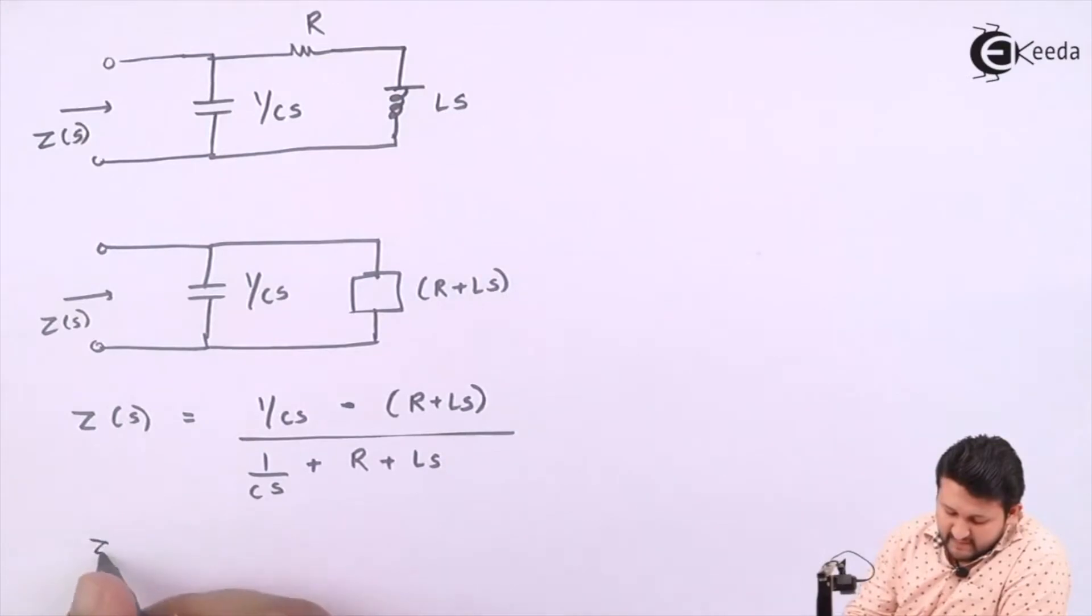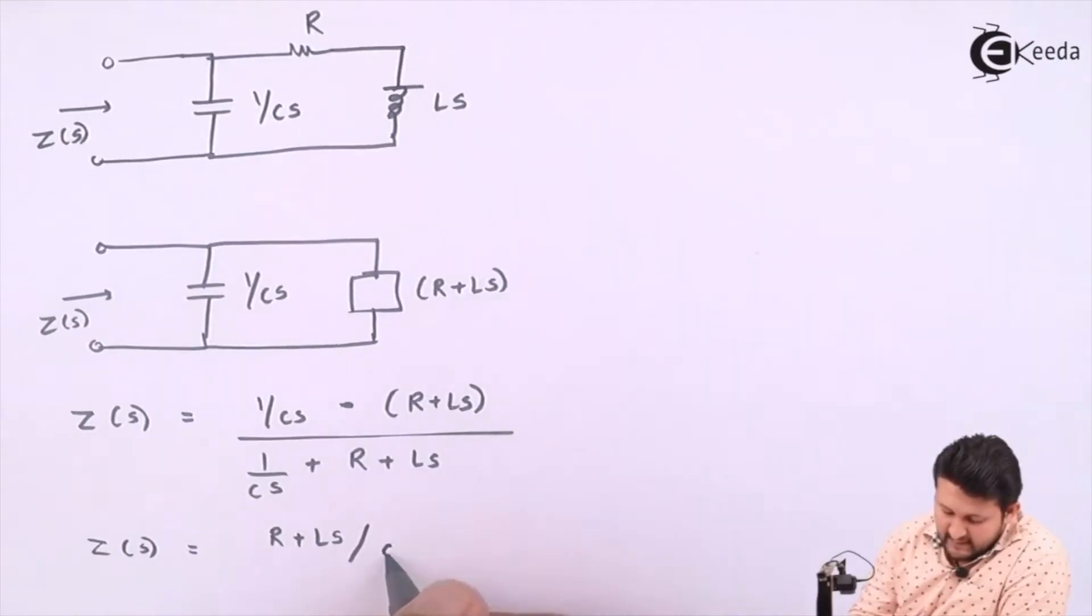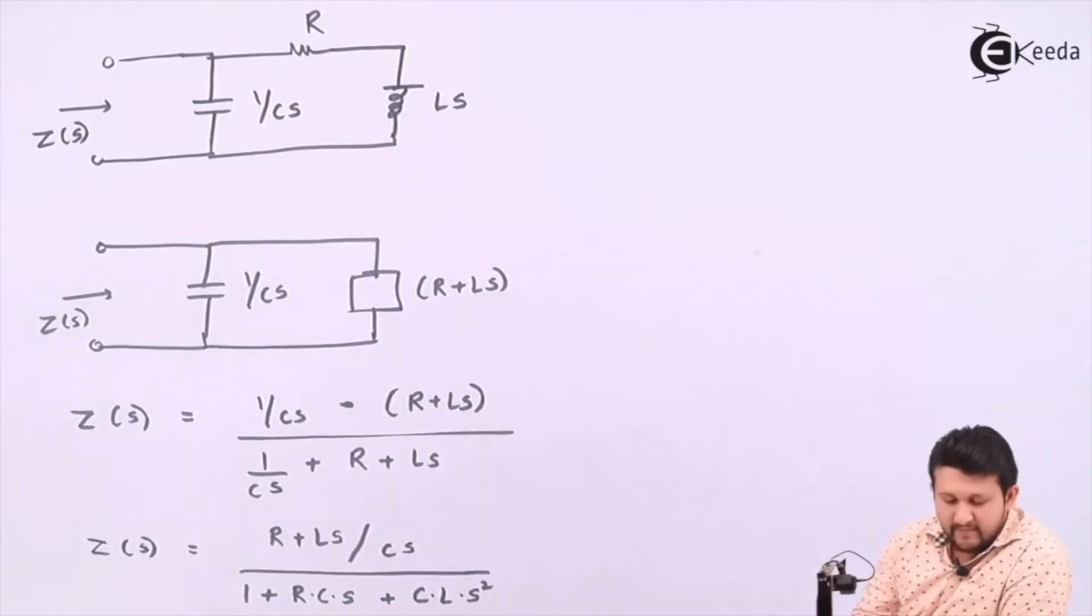Simplify the equation such as R plus Ls, divided by Cs, one upon, multiply over here. So you'll have R into C into s plus C into L into s squared. Simplify it more, take it down.